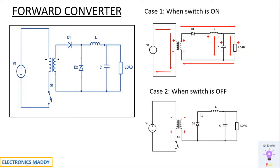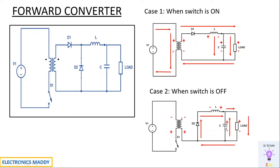D2 is forward biased and D1 is reverse biased. The inductor, which had stored energy with polarity plus and minus previously, will not allow a sudden change in current — it reverses its polarity and continues to supply current in the same direction, acting as an energy source. The capacitor, which was fully charged in the previous cycle, also starts acting as an energy source. Current flows through this path, and since D2 is forward biased it acts as the return path — freewheeling action takes place.